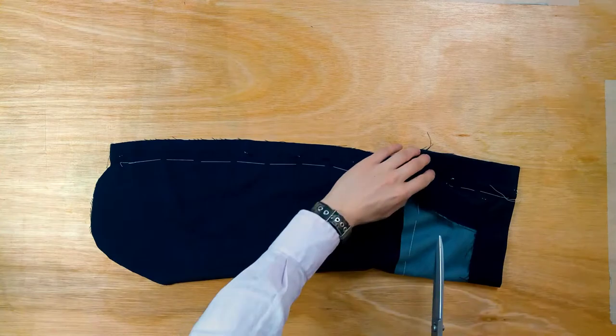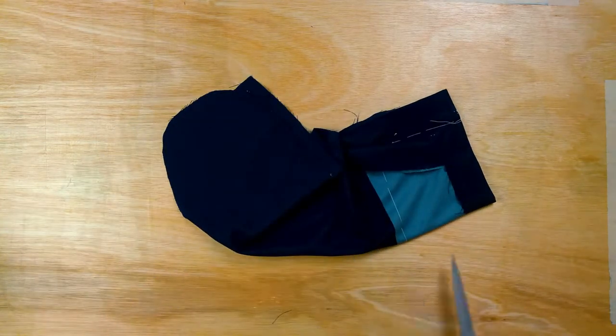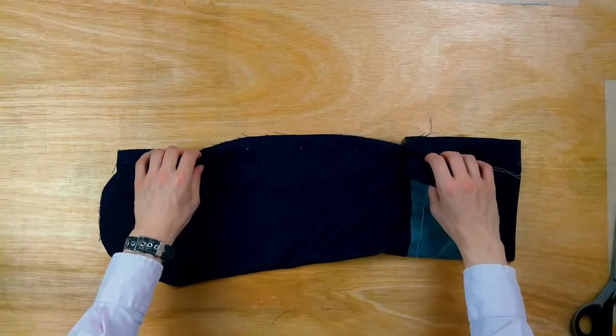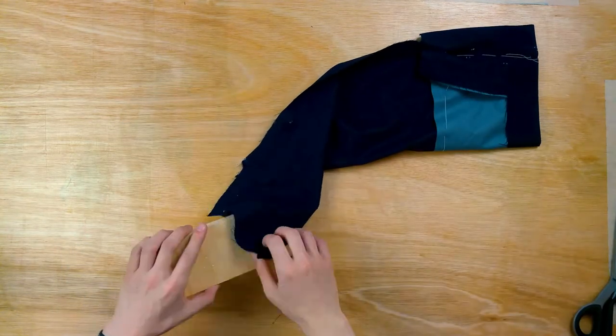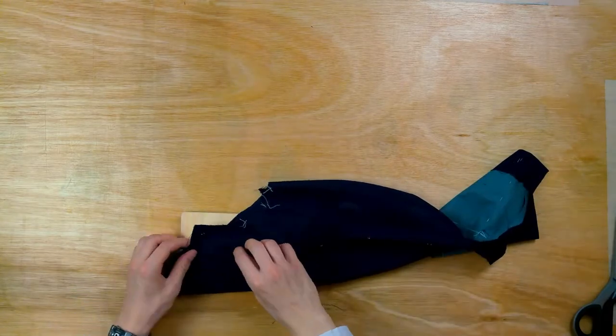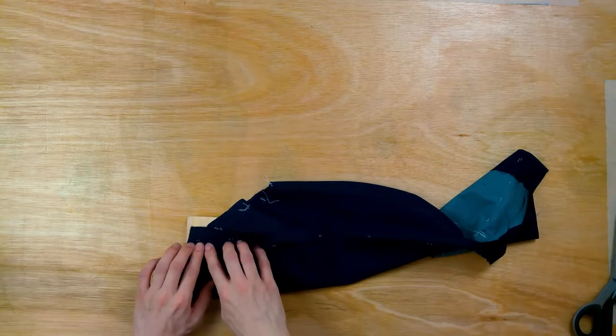Press the seam flat, stretch the inlay a little bit just above where the vent finishes, and press open on a sleeve board. However, the inlay around the vent needs to twist, so gradually twist it to a little below the elbow and make sure that it is properly flattened.